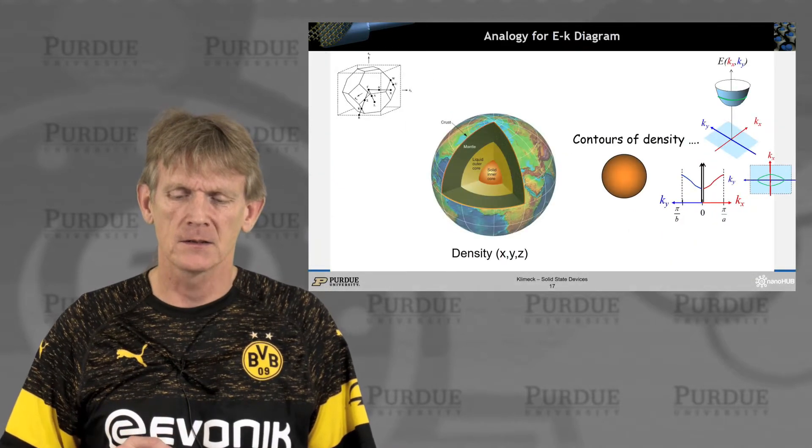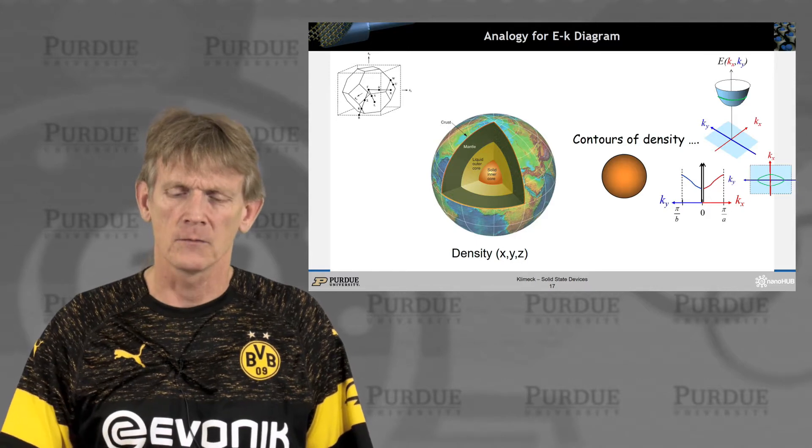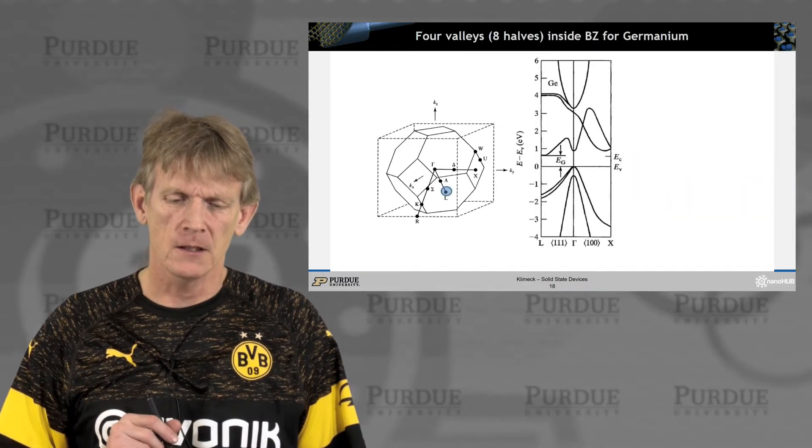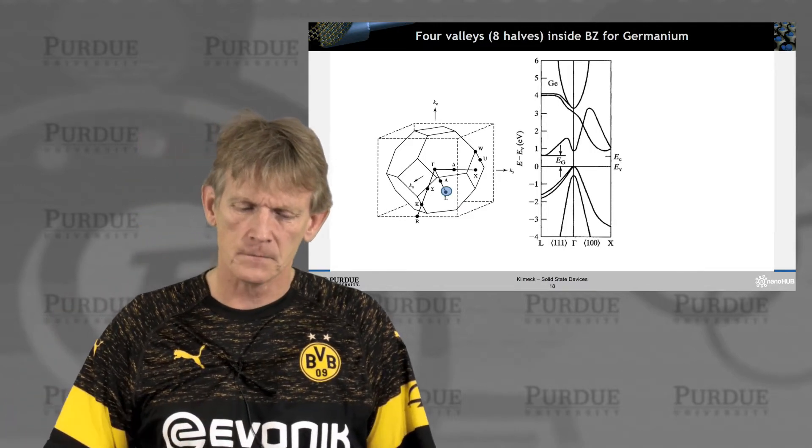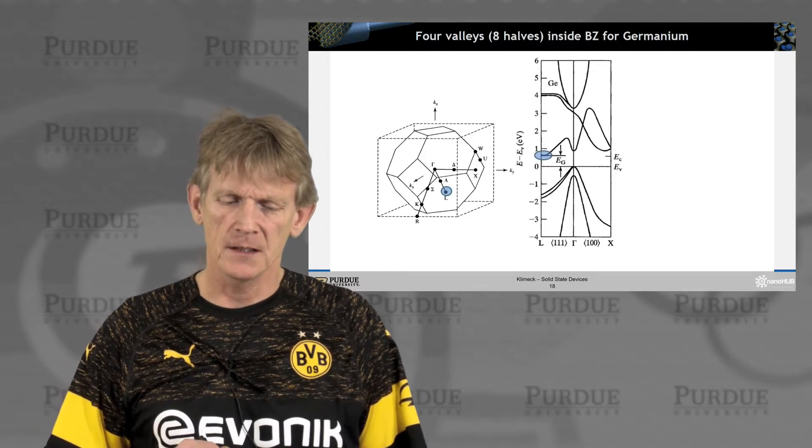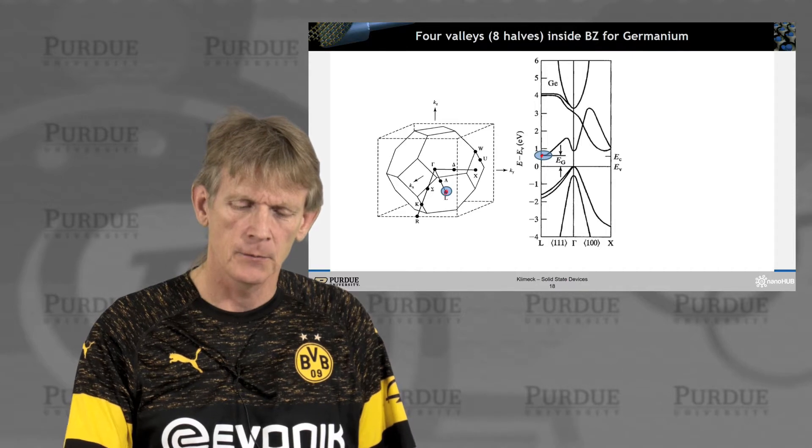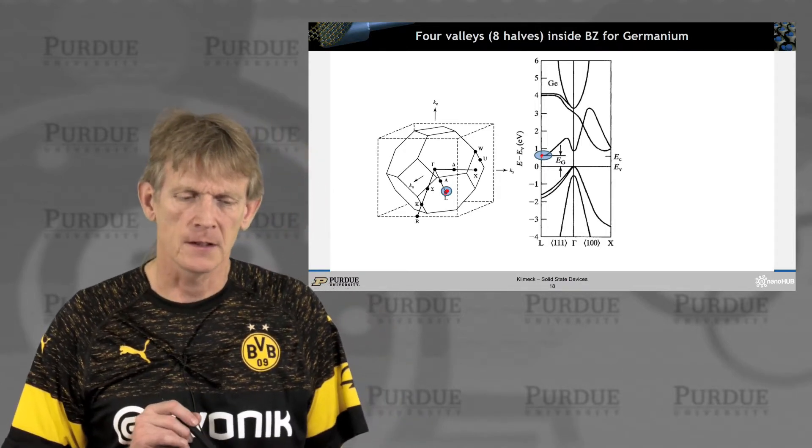Let's look at it again as a multidimensional data representation, where we want to have contours of density. So here, again, we look at germanium. We look at the L point here. And what we see is we have a minimum point out here and a minimum point that corresponds in the Brillouin zone, a minimal point there.